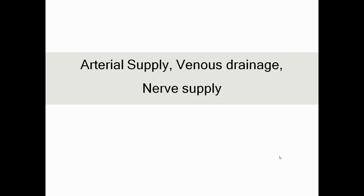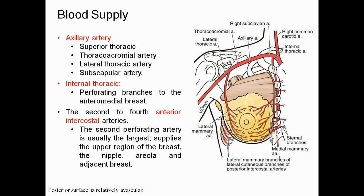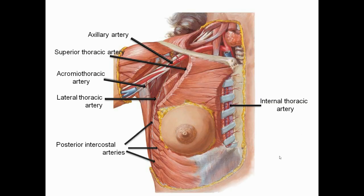The arterial supply of the breast comes from: the axillary artery — including the superior thoracic artery, thoracoacromial artery, lateral thoracic artery, and subscapular artery — and the internal thoracic artery providing perforating branches to the anterior medial breast. The second to fourth anterior intercostal arteries also contribute. The second perforating artery is usually the largest, supplying the upper region of the breast, the nipple, areola, and adjacent breast tissue.